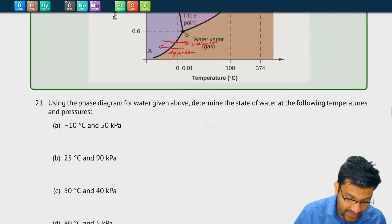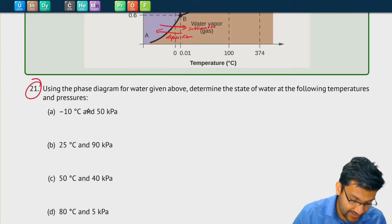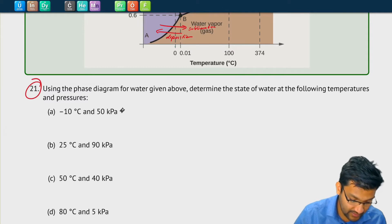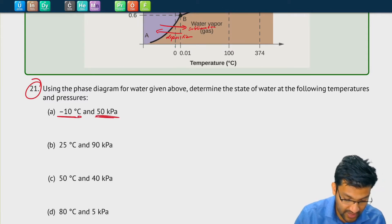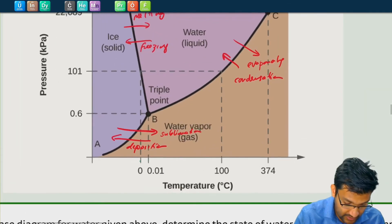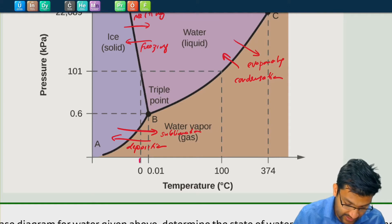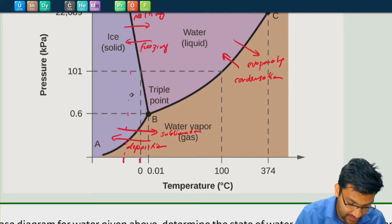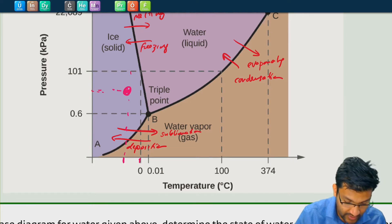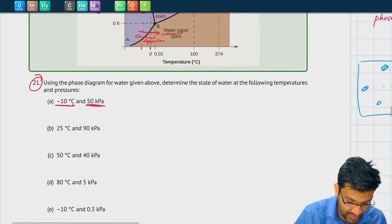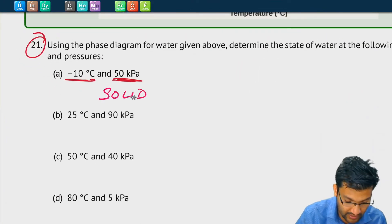Let's see how we can use one of these by looking at number 21. It's asking us, by looking at the phase diagram, to determine the state of water at negative 10 degrees Celsius and 50 kilopascals. Negative 10 degrees Celsius and 50 kilopascals falls somewhere in the solid region of the phase diagram, so this should be a solid.